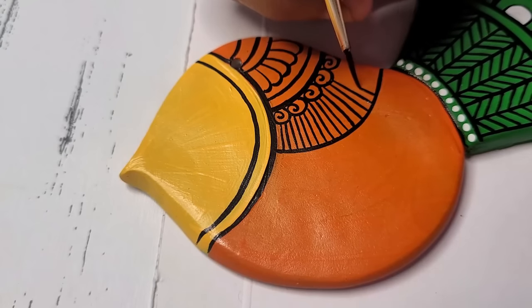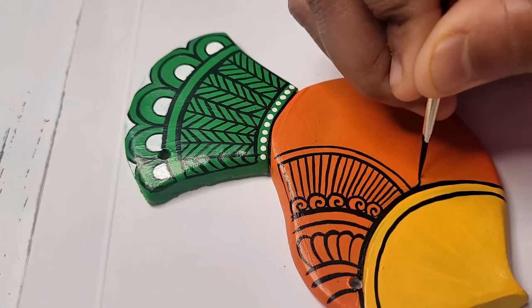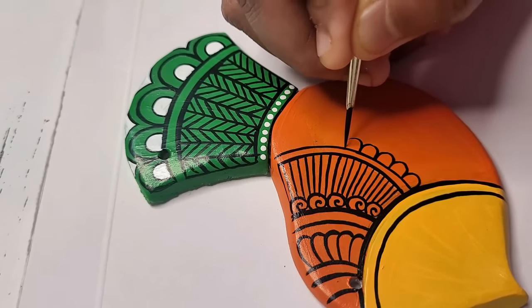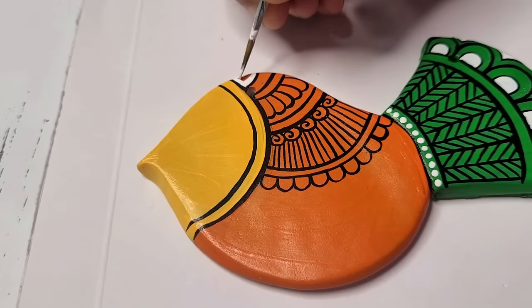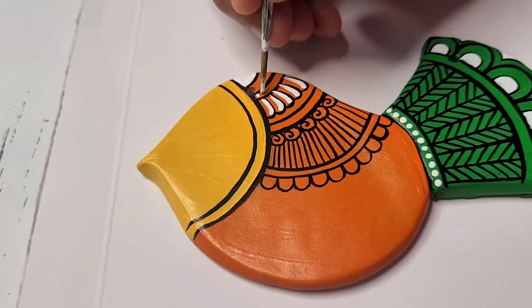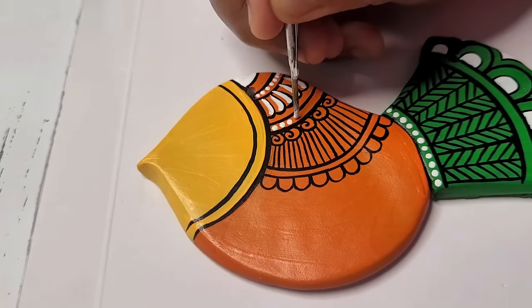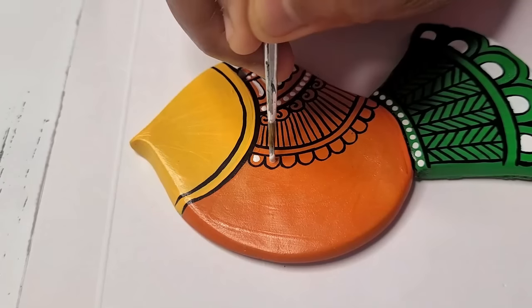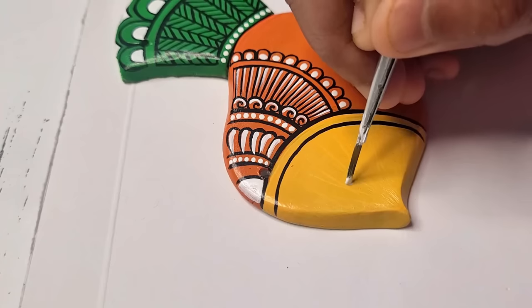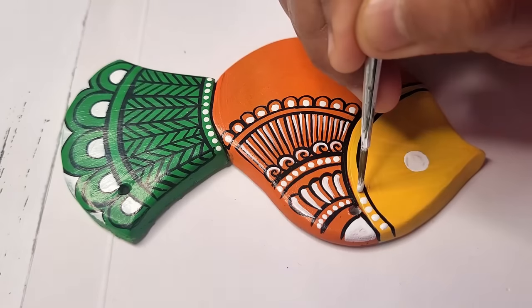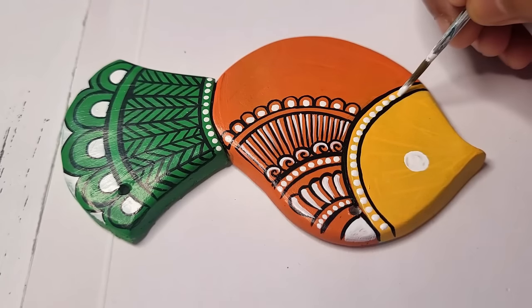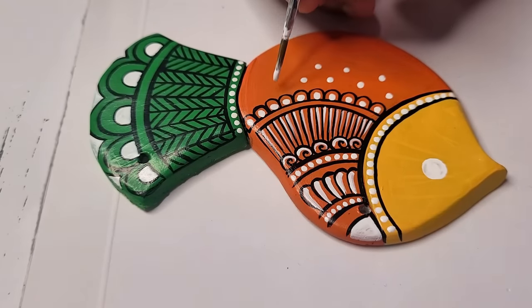Adding some different patterns using black and white color on the main body part. If you want, you can use multi colors to enhance the look of this pendant. To be very frank, I haven't planned a single thing for this DIY. Whatever is coming in my mind, I'm just going with the flow. Adding some dots randomly.